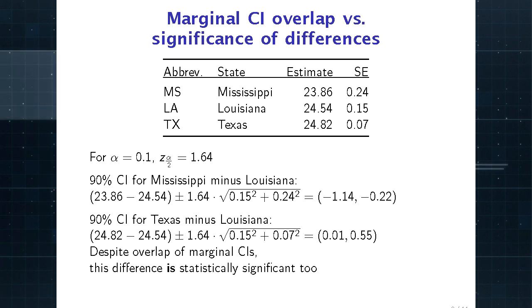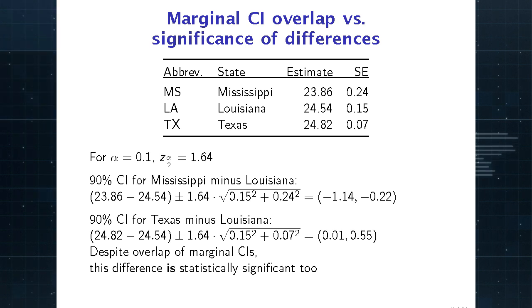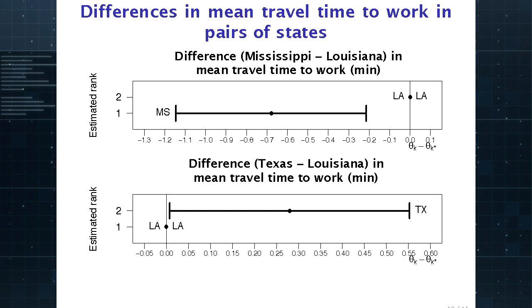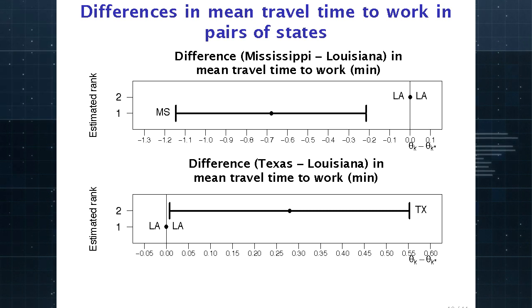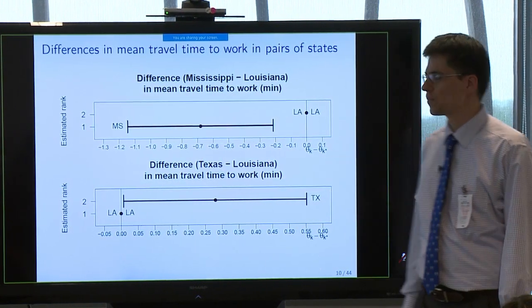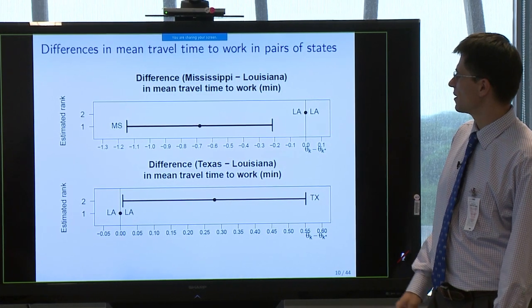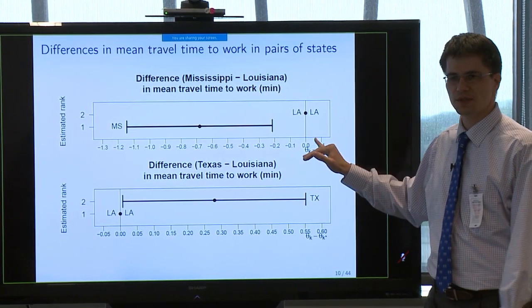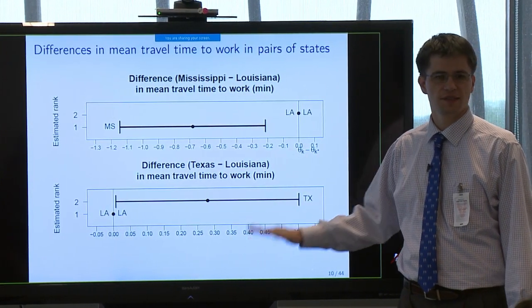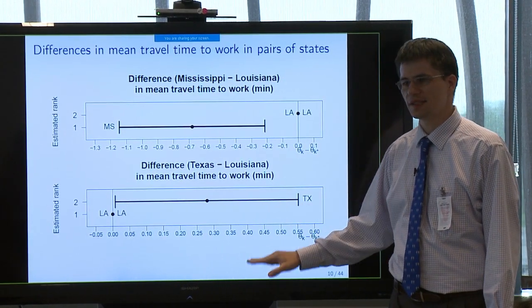Knowing that, we'd like to come up with visualizations that help us make correct inferences directly from the plot. One way is to plot the difference and its confidence interval directly. Louisiana minus itself is always zero at baseline. Mississippi minus Louisiana and Texas minus Louisiana are shown with their confidence intervals. Because neither confidence interval overlaps zero, we can directly read off that these differences are statistically significant — assuming only one comparison is being made at a time.